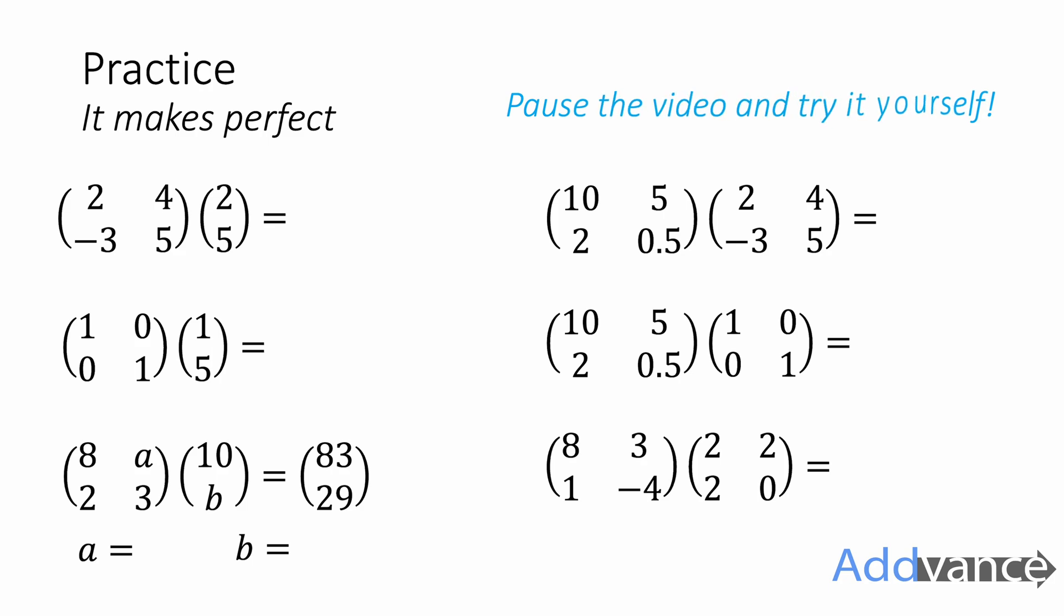I've got some practice for you to try here. There's some on the screen. I'd like to pause the video and have you got this yourself. There are two interesting ones on the board, on the screen. There's this one where you have to find the A's and B's here, and you have to find the specific value of A and the specific value of B in that matrix, in that matrix and that vector. So you kind of have to work backwards a little bit there. I'm also really interested in if you can see any patterns with the 1, 0, 0, 1 matrices. There's something special about those that you might be interested in spotting.